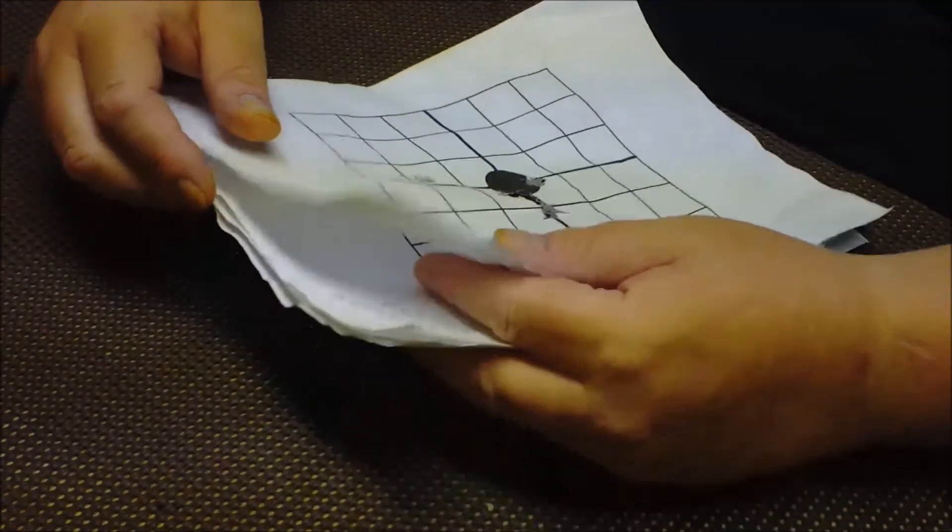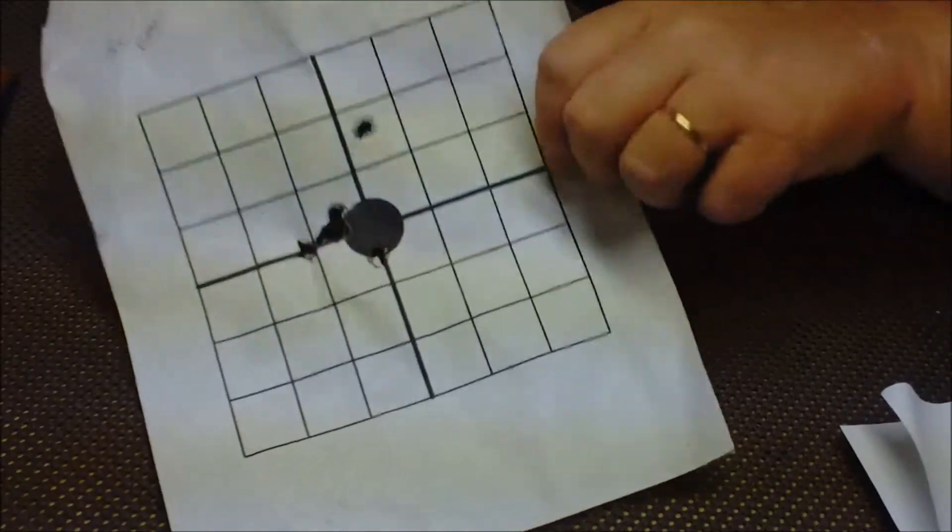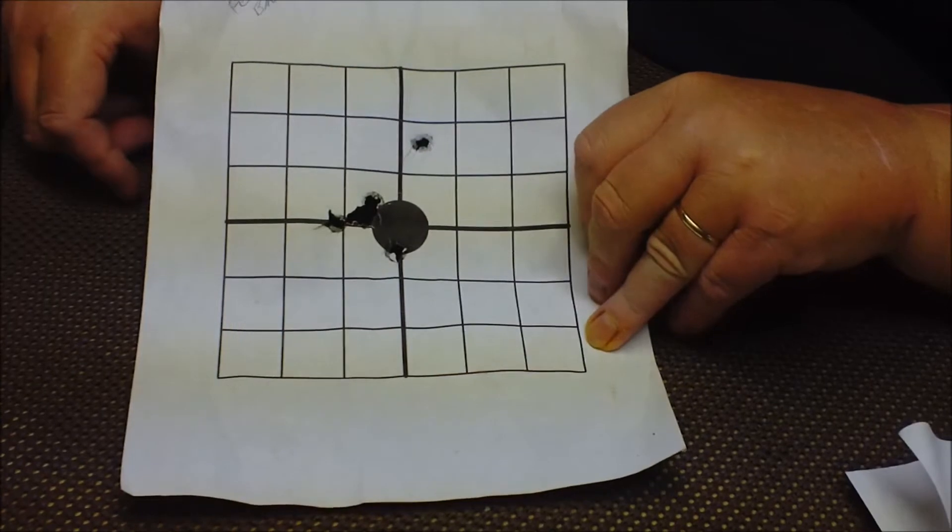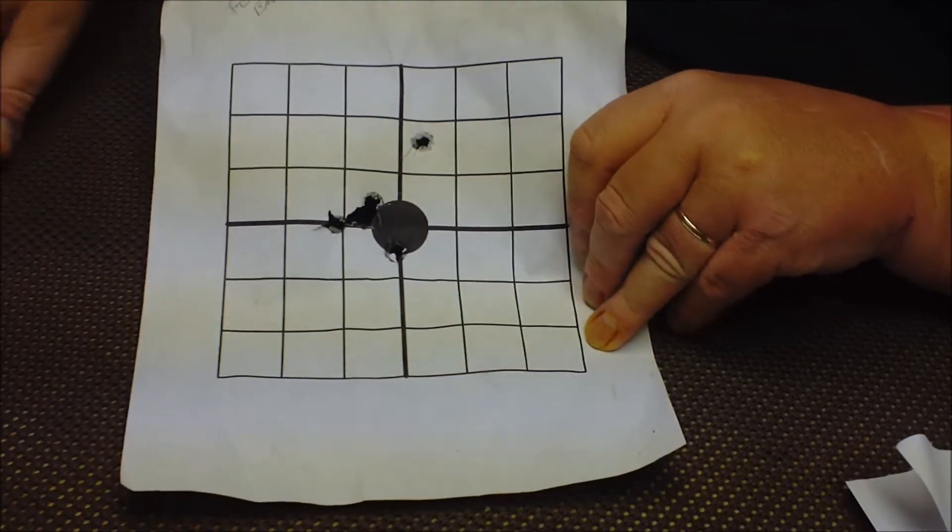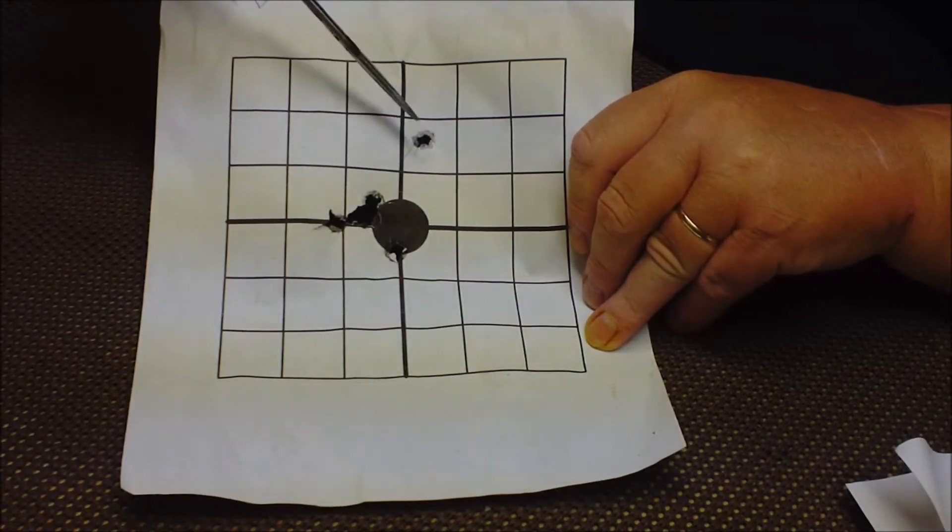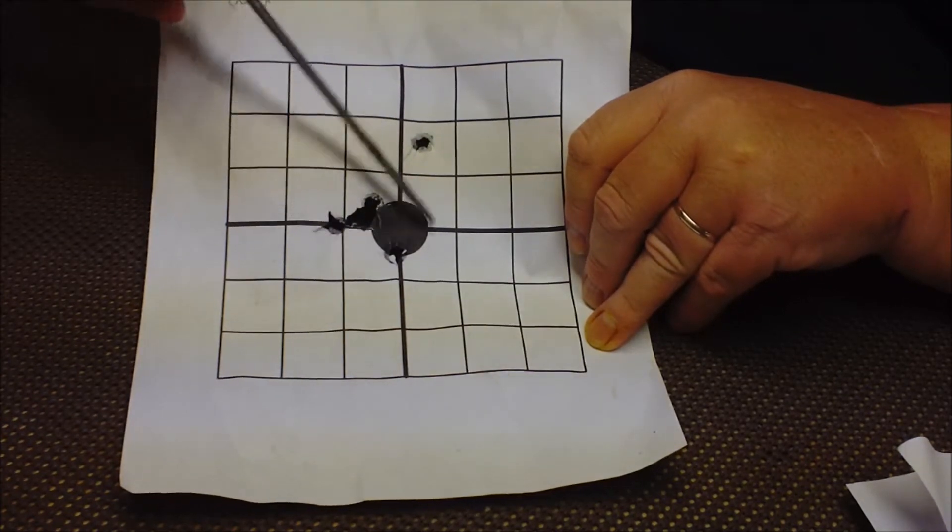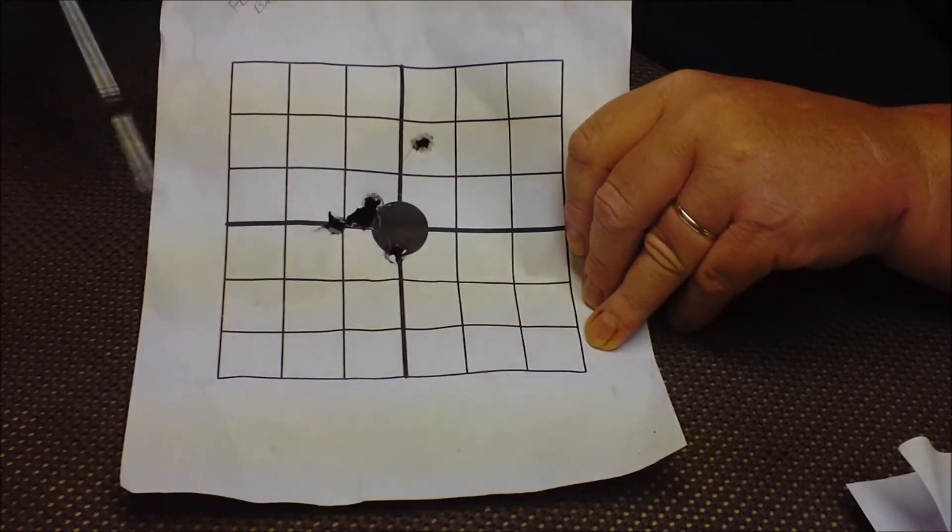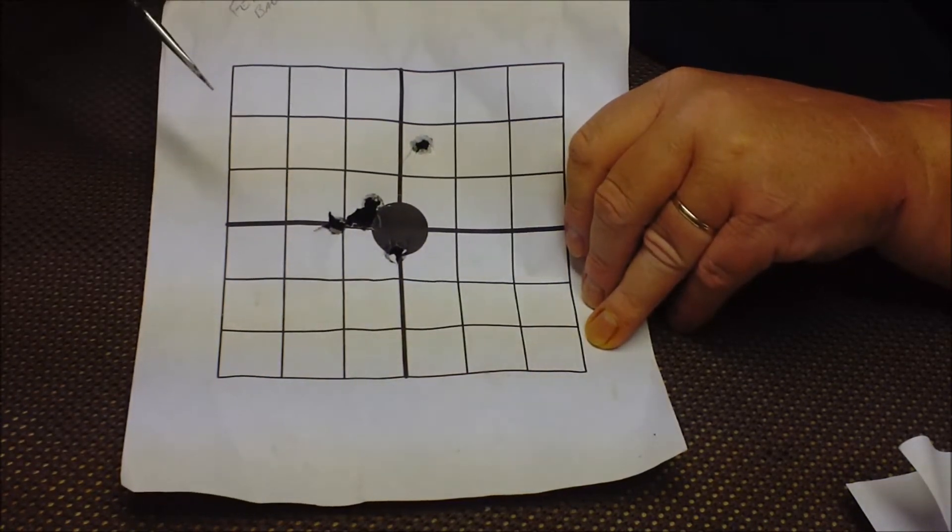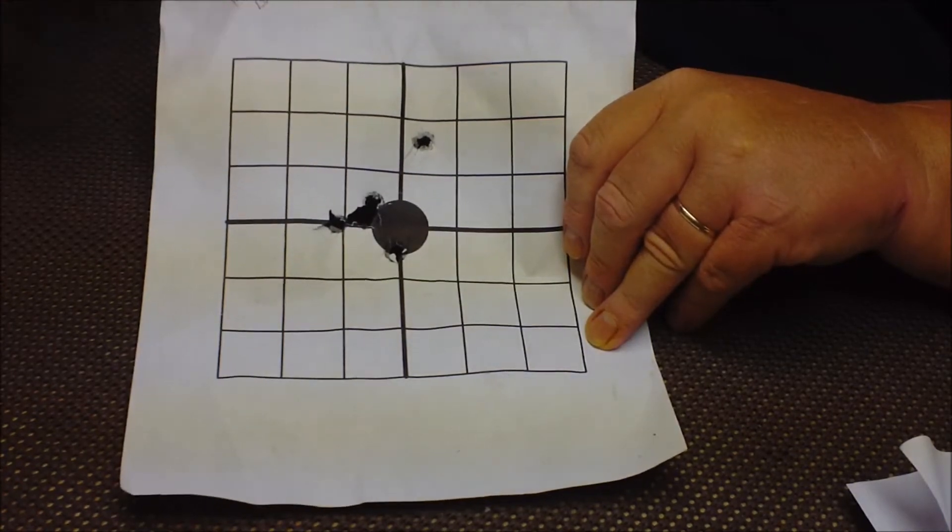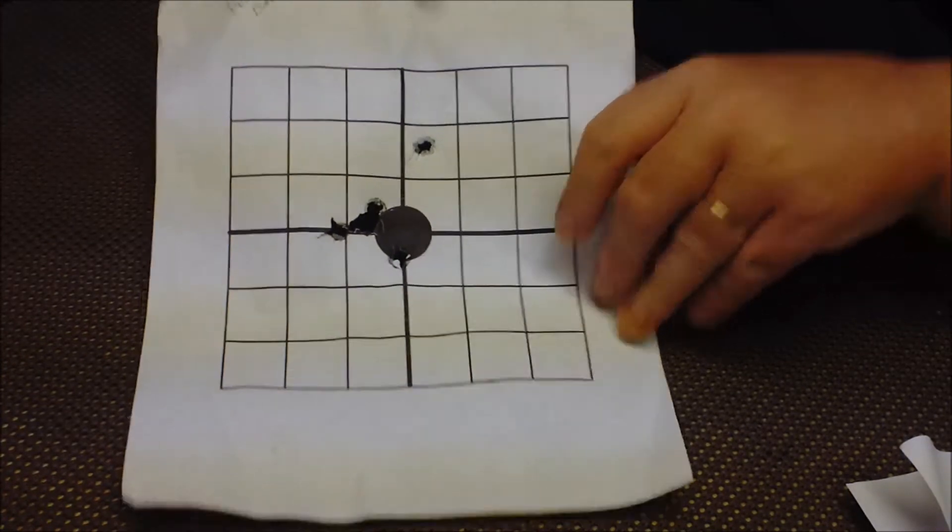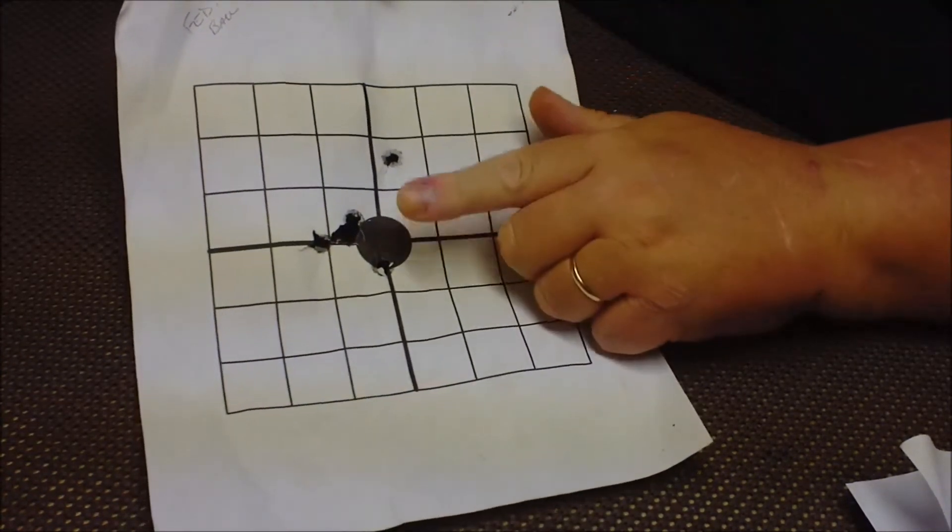I'm going to show these one at a time. I ran a baseline target with some Federal 230 grain ball which has always shot well in it. I got three - one down here and one up here. I probably pulled this one. This is pretty typical of my grouping with the Federal 230 grain. I'm trying to duplicate this accuracy. This is an inch and a half here, pretty small. Ten yards is my usual for handgun. That's what I'm shooting for.